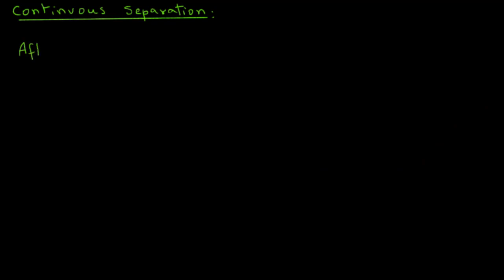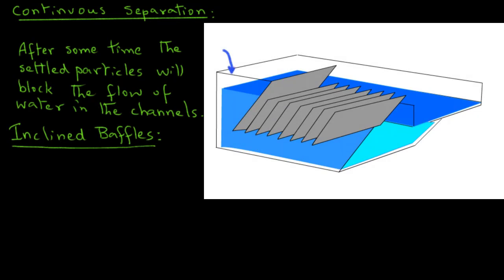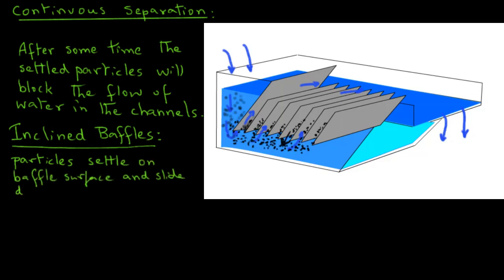But after some time, the settled particles will start to block the flow of water in the channels. To prevent this blockage, we may consider using inclined baffles as we see in this second animation. Water flows through the channels as it moves from left to right. When we introduce sand particles, they will settle on the baffle surface and slide down to the bottom.